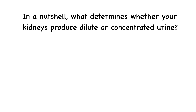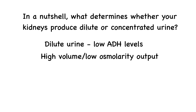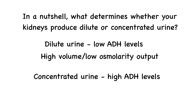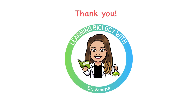In a nutshell, what determines whether your kidneys produce dilute or concentrated urine? Dilute urine is formed when antidiuretic hormone levels are low, keeping the collecting ducts impermeable to water, leading to a high volume, low osmolarity output. Concentrated urine is produced when antidiuretic hormone levels are high, increasing water reabsorption and allowing urine to reach maximum concentration. The medullary osmotic gradient and countercurrent mechanisms are essential for creating the conditions necessary for water conservation when needed. If you found this video helpful, don't forget to like, share, and subscribe so that you never miss out on new content. Thank you.